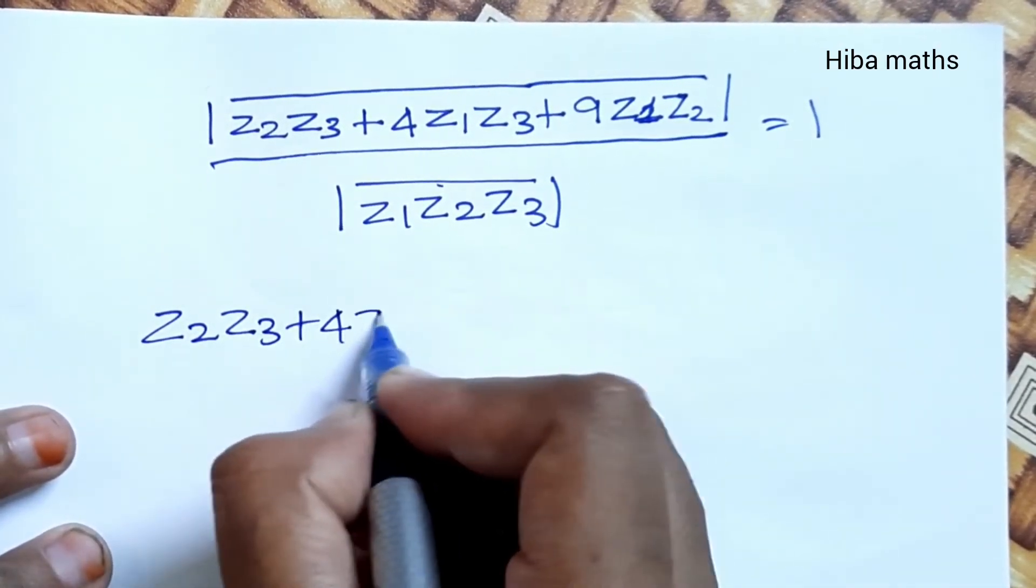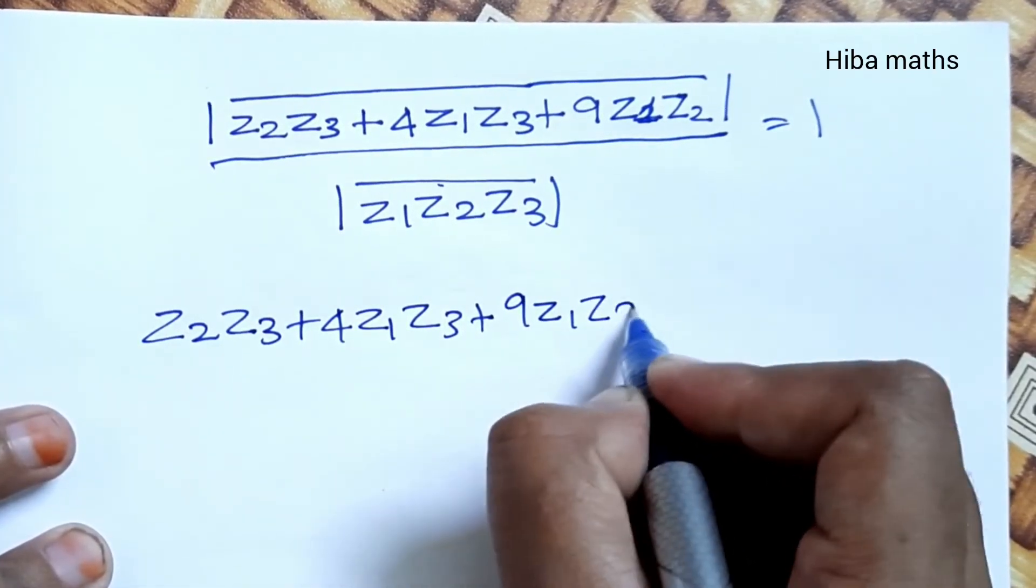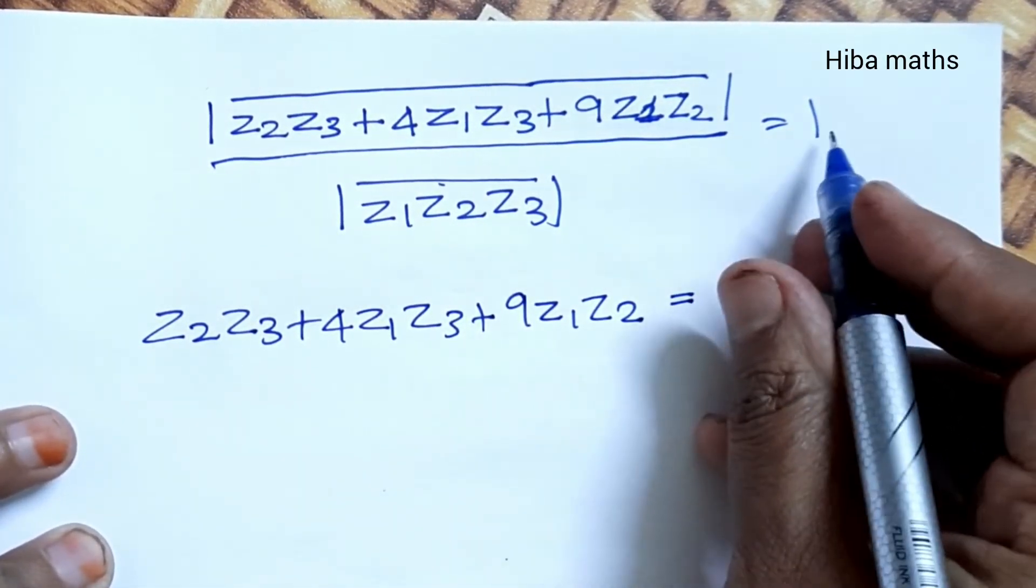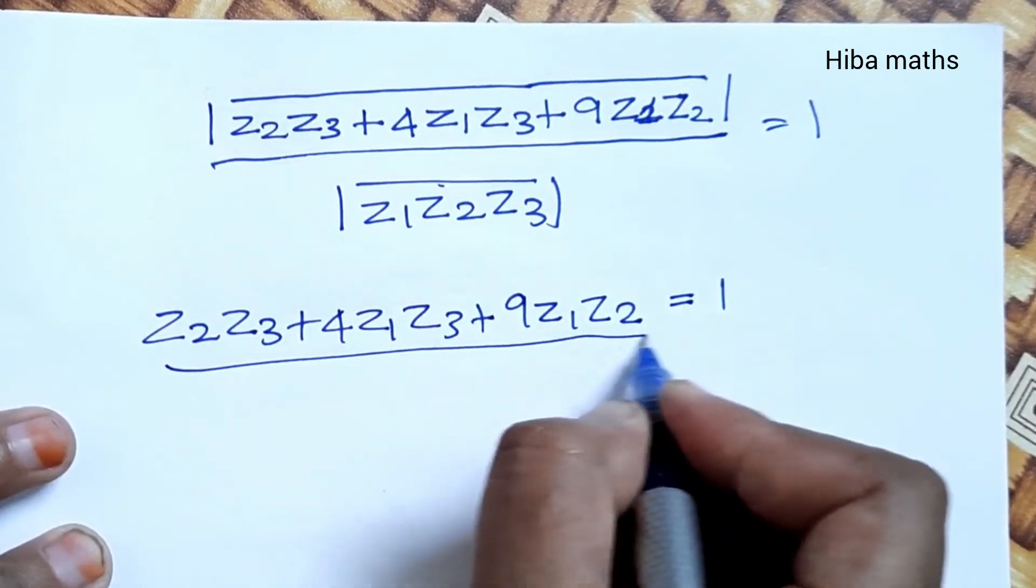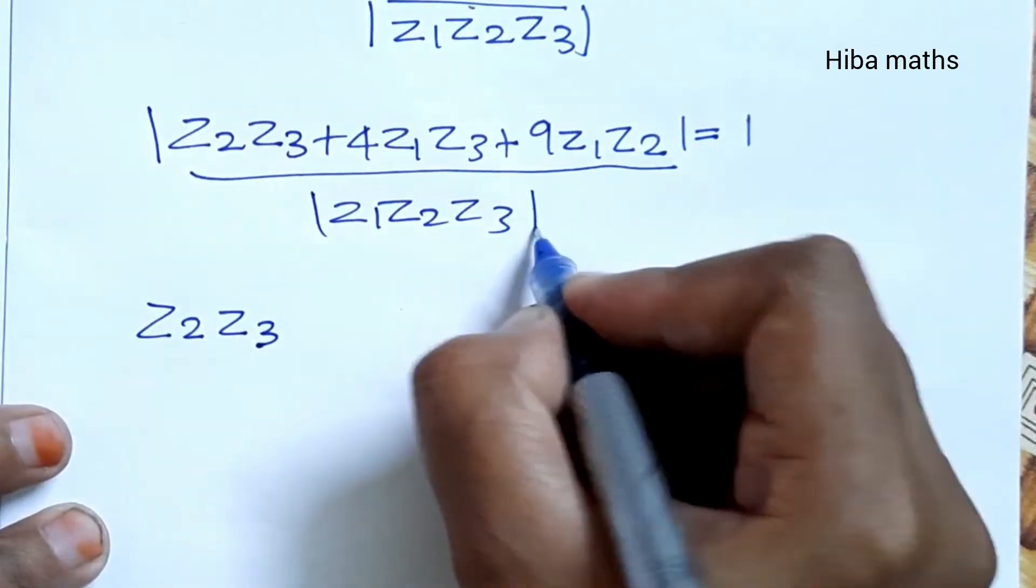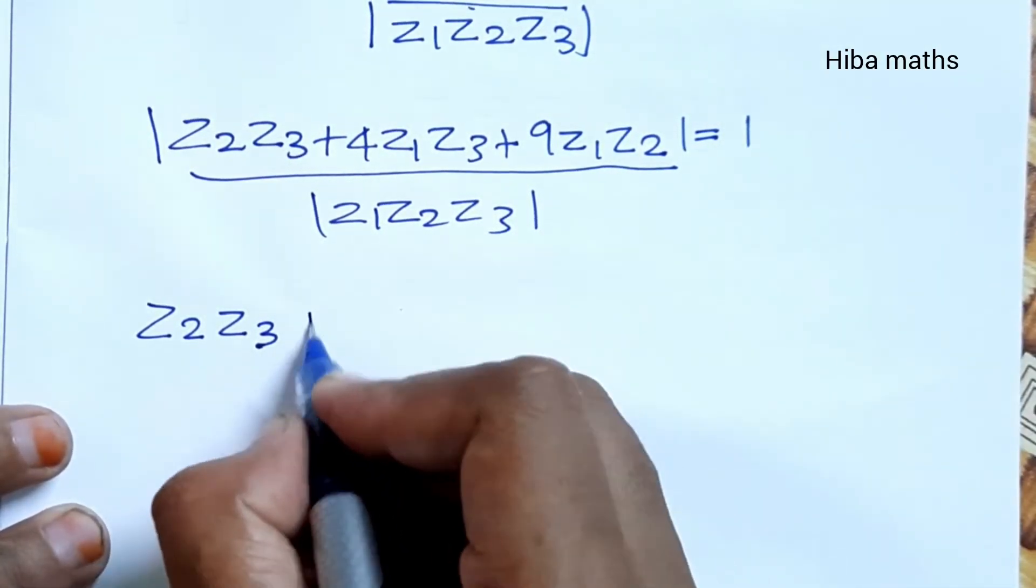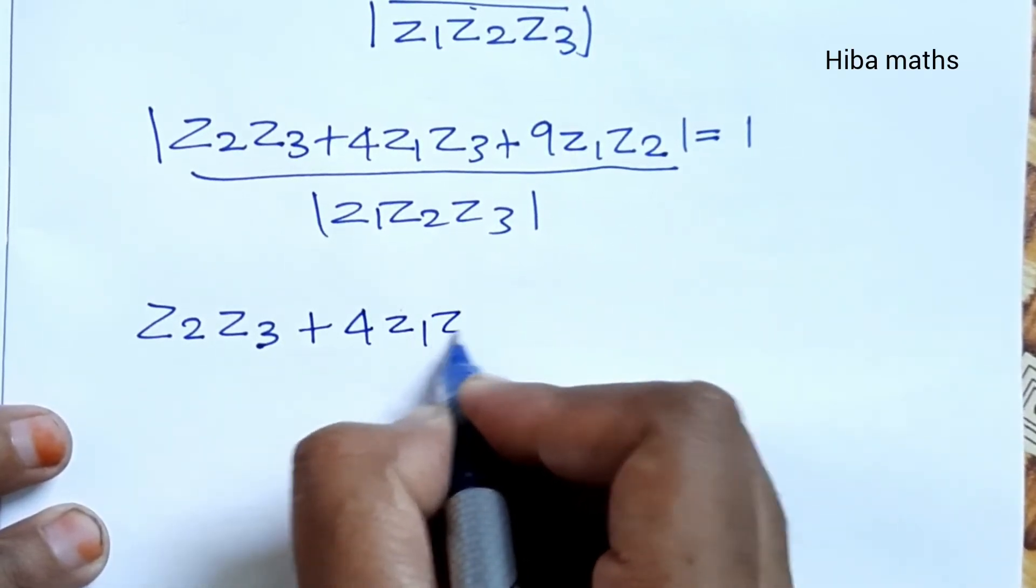So Z2Z3 plus 4Z1Z3 plus 9Z1Z2 equals modulus of Z1Z2Z3.